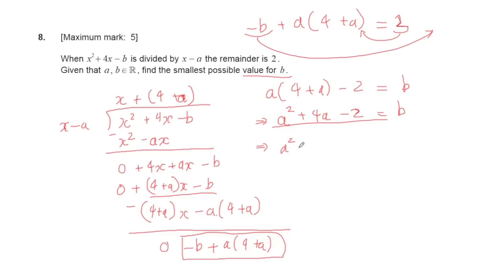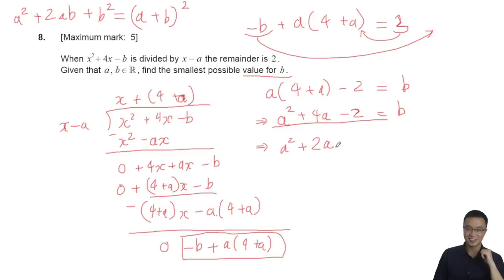We have a² and 4a, which means 2ab = 4a, so b = 2. To complete the square, I need to add 2², which is 4. Since I'm adding 4, I must also subtract 4 to maintain equality.